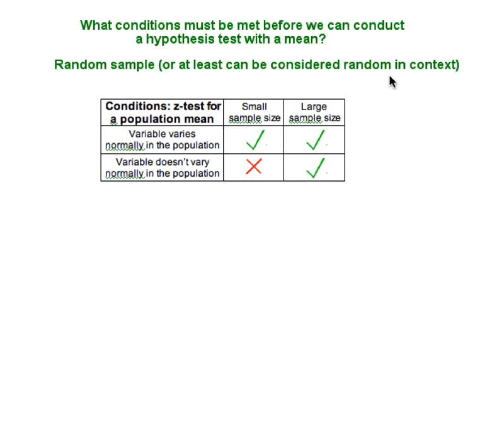we know from our work on sampling distributions that if a variable varies normally in the population, then random samples will have normally distributed sample means and this occurs regardless of sample size.